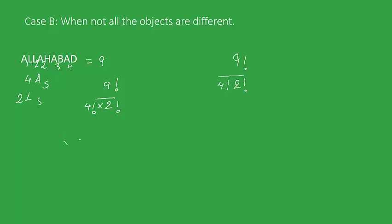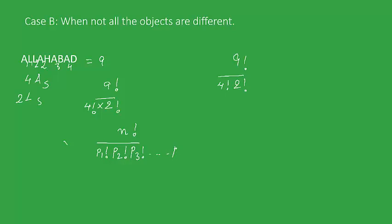Similarly, if we have more repetitions, the answer simply comes out to be N factorial — that is the total number of letters — divided by the factorial of the count of letters of the first kind that are the same, multiplied by the factorial of the count of the second kind, the third kind, and so on, down to pK factorial. That is the general formula.